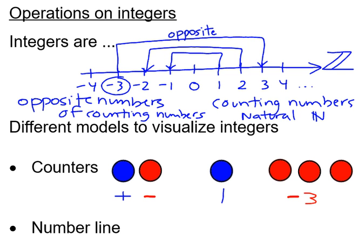You could also use a number line to represent our numbers. So like we did earlier, 1, 2, 3, 4. Or negative 1, negative 2, negative 3.